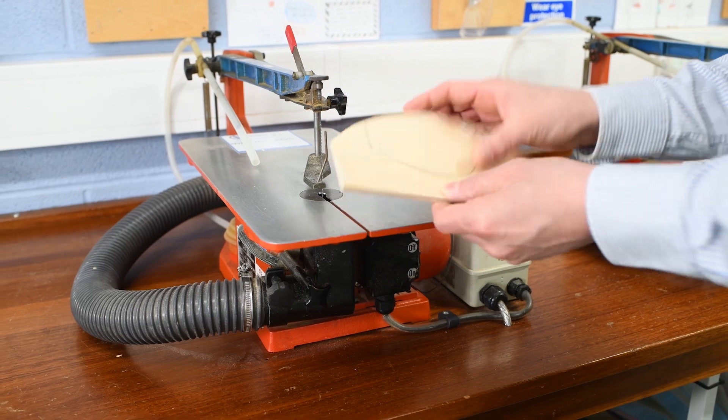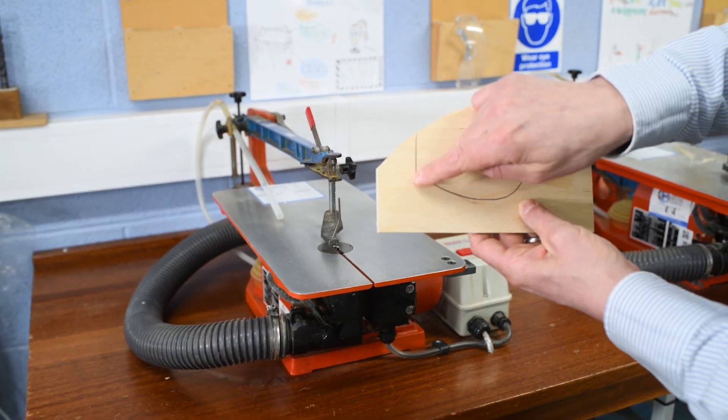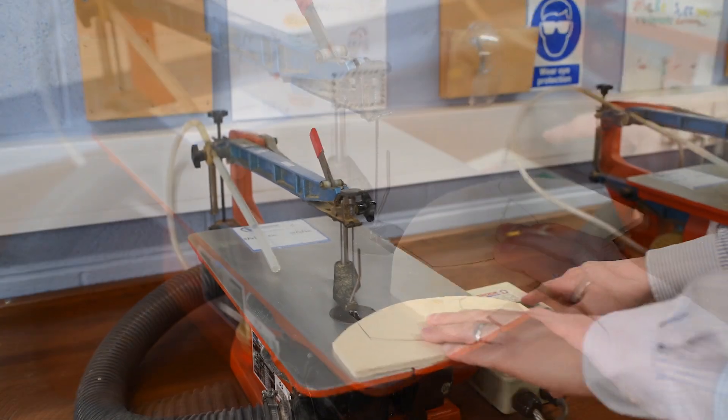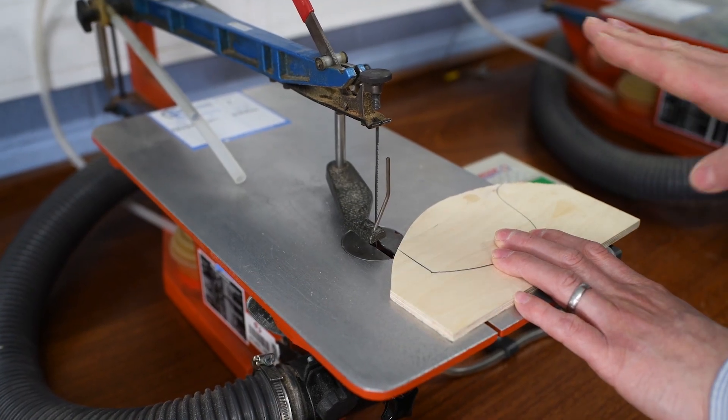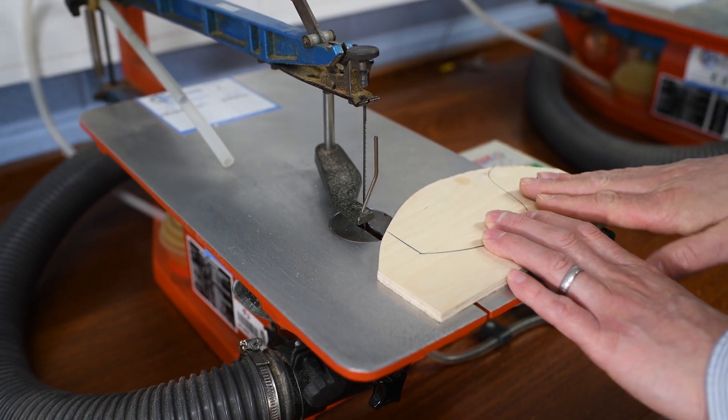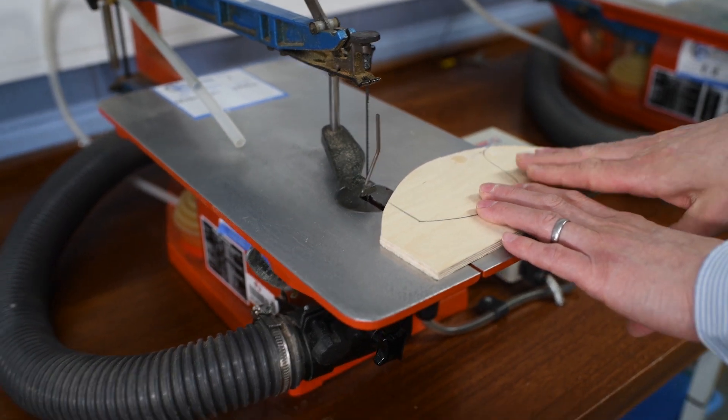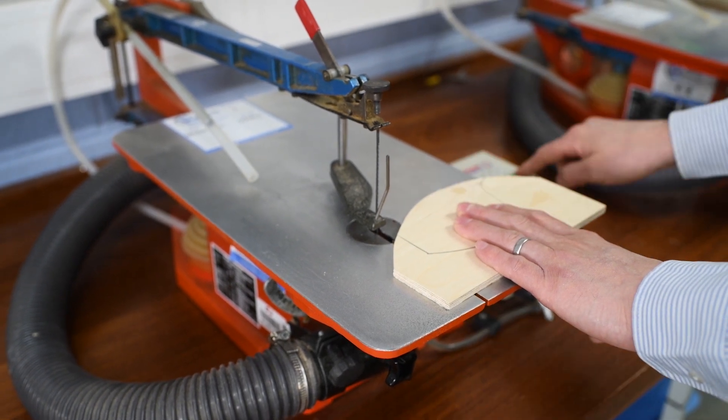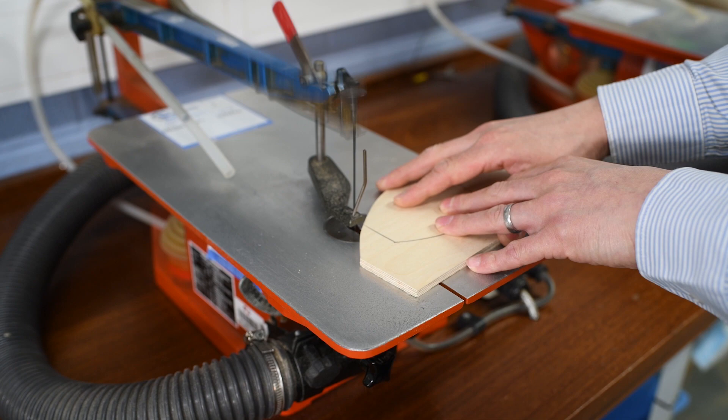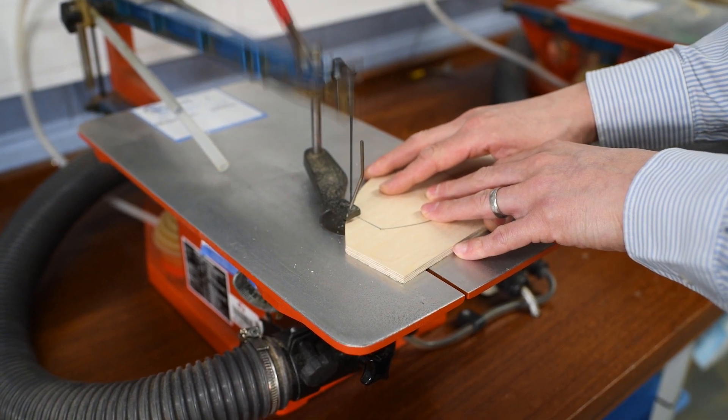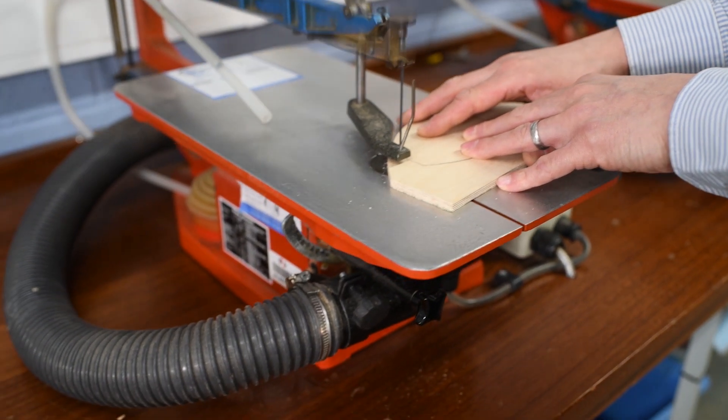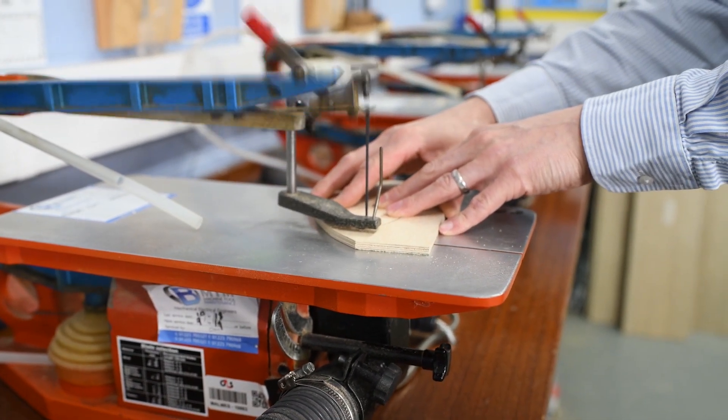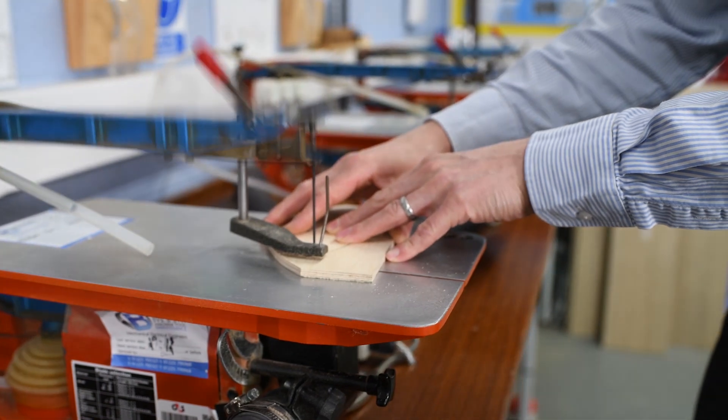So to start with, I'm going to cut this straight line that I've previously marked on my piece of plywood with a pencil. I'm now going to turn the machine on and gently hold the material down while sliding into the machine. If it starts to rattle, you simply compress the piece of material down to the table. And then I'm going to remove the material backwards.